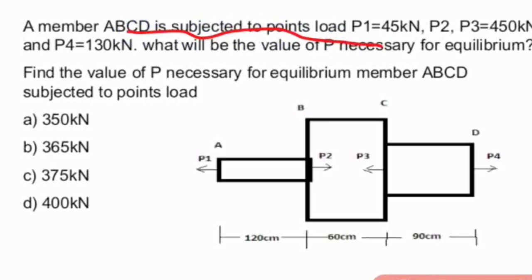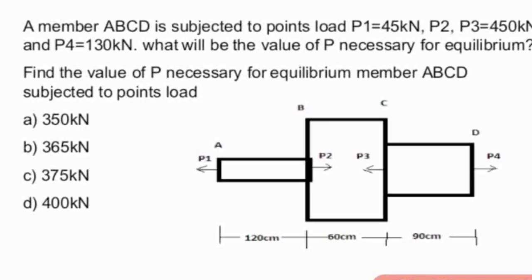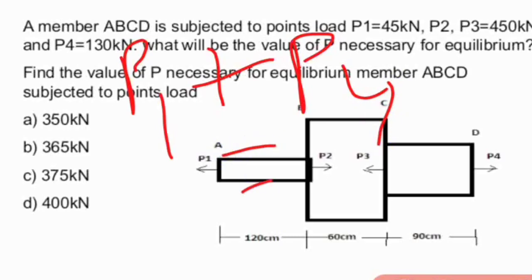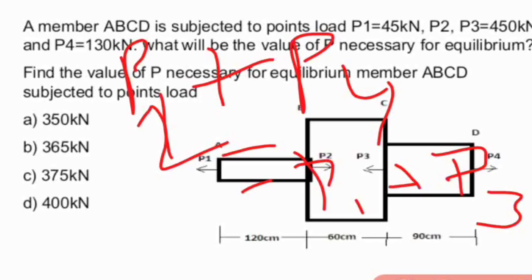Next: a member ABCD is subjected to point loads P1 = 45 KN, P3 = 450 KN, and P4 = 130 KN. Find the value of P2. Looking at the diagram, P1 and P3 act in one direction while P2 and P4 act in the opposite direction. So equating the forces: P2 + P4 = P1 + P3.